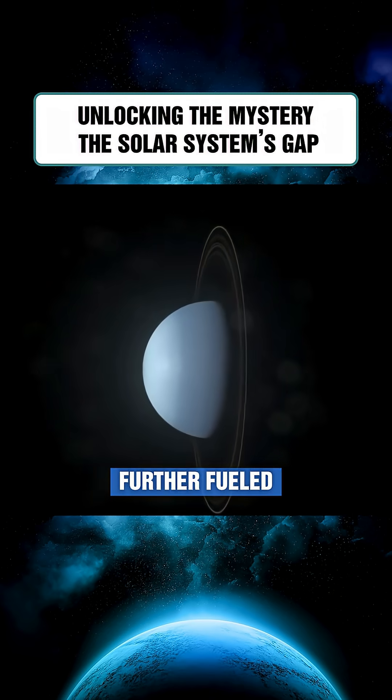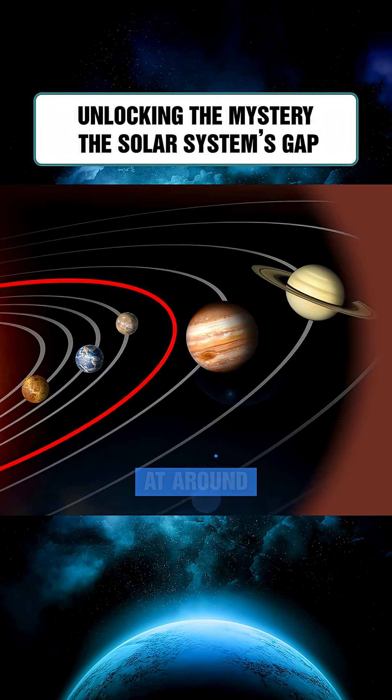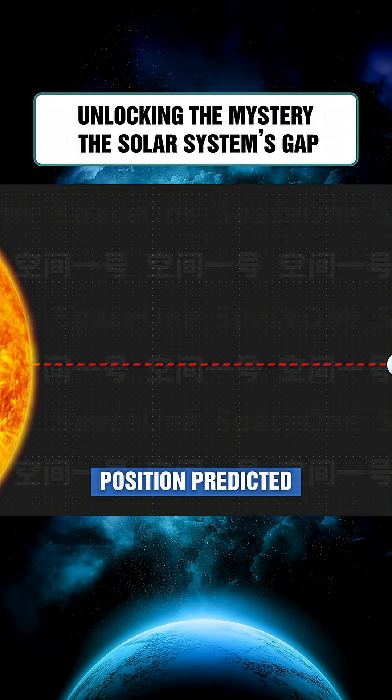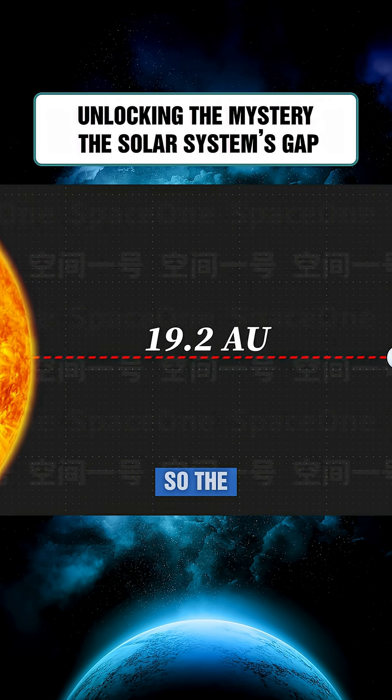Discovering Uranus further fueled the belief that there had to be a planet at around 2.7 astronomical units, the 4 plus 24 position predicted by Bode's Law. So the search began.